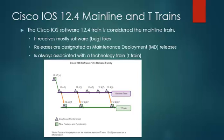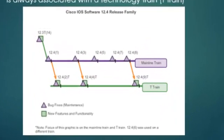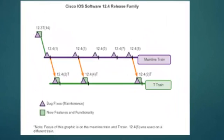A mainline train is always associated with a technology train, or T-Train. A T-Train, such as 12.4T, receives the same software bug fixes as the mainline train, but also receives new software and hardware support features. Releases in the Cisco IOS 12.4T train are considered early deployment releases. The migration from software release 12.3 to 12.4 shows that within a software release family there may be two or more closely related active trains — the 12.4 Mainline and the 12.4 T-Train.